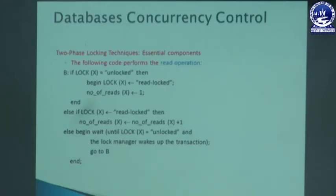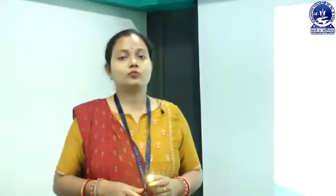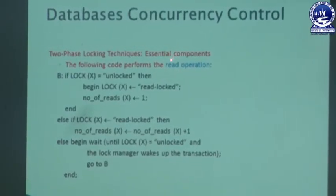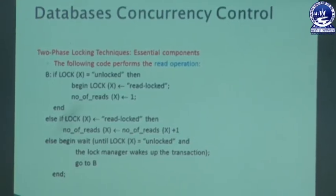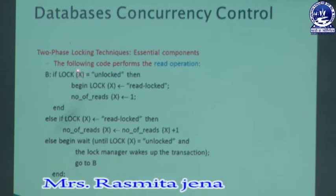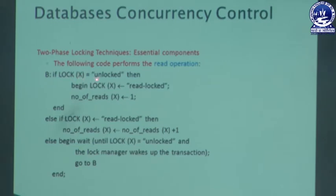Next we will discuss how to perform the read lock X operation in two-phase locking. A transaction first checks the state of data item X — whether it is locked or unlocked. If lock X equals unlock, the transaction sets lock X as read lock and sets number_of_reads(X) to 1, meaning the first transaction has locked X in read mode.